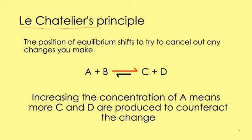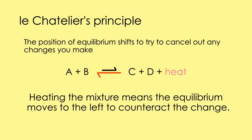For example, if I increase the concentration of A, it will try to reduce the concentration of A by pushing the position of equilibrium to the right, so I'll get more product. If it's to do with temperature — say the forward reaction is exothermic — if I increase the temperature, it's going to favour the backward reaction in order to try and reduce the temperature. Therefore I'd get a lower yield, because I get less product.